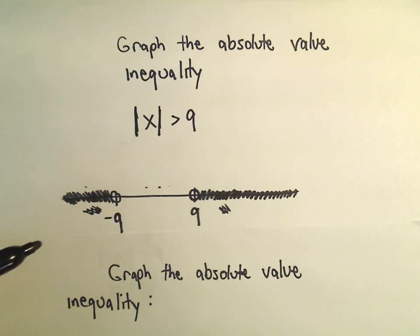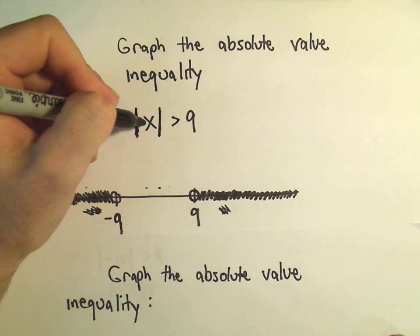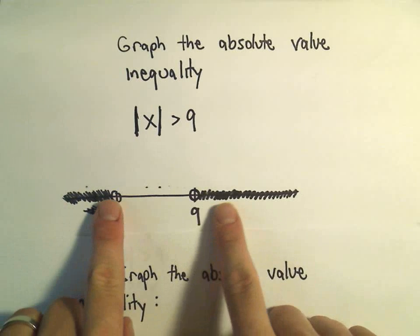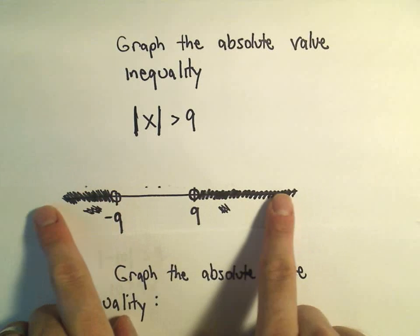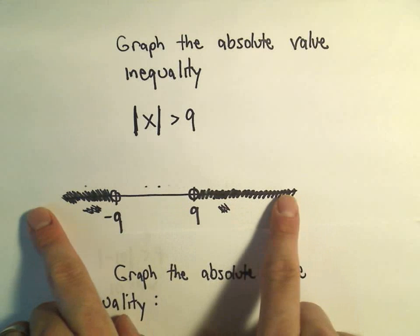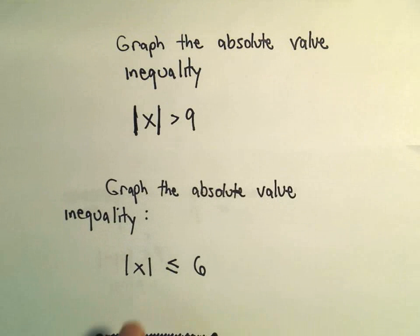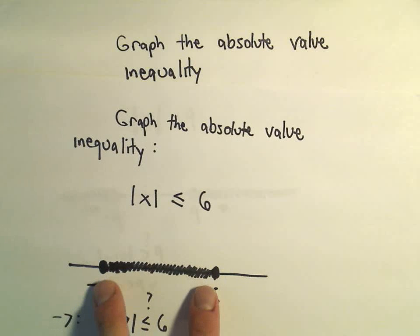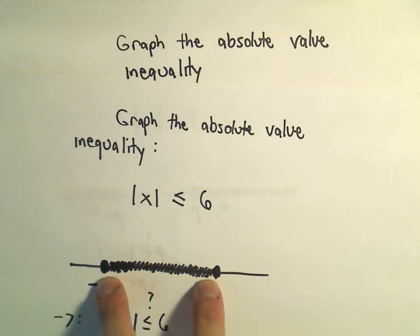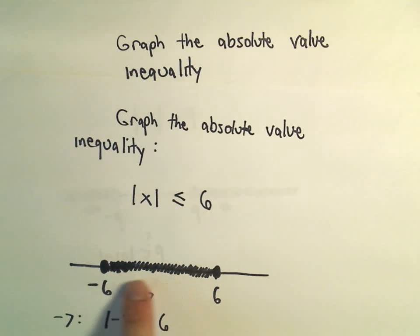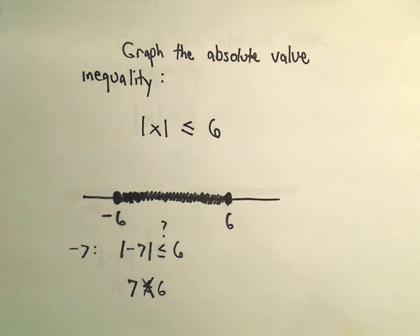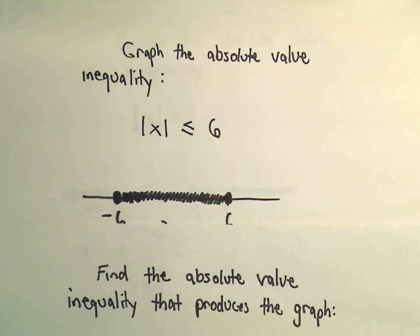One little thing to observe here: notice we had the absolute value of x greater than a number, and we get numbers on the outside, extending off to negative infinity and positive infinity. Here, with x less than or equal to something, we get a finite section of numbers — a little segment in between. So maybe there's something to think about as you go along here.